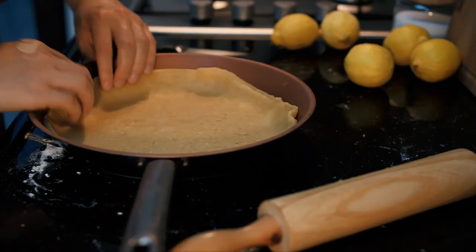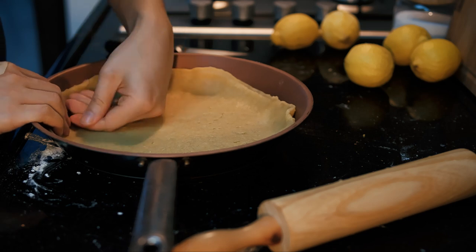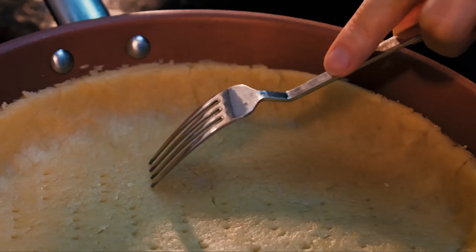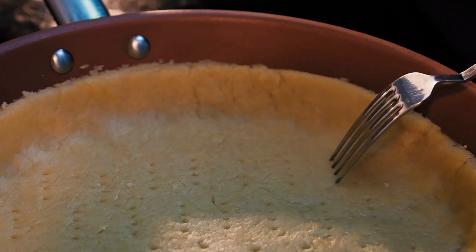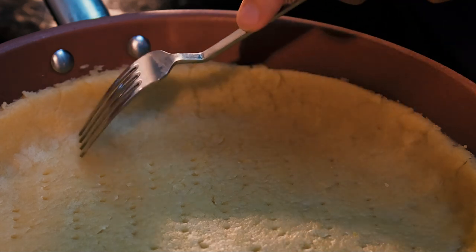If you don't have a tart tin but want smooth edges, don't worry. Simply remove excess dough with a spatula, but make sure to leave enough height for the custard. Keep in mind that the crust will shrink a little in the oven.